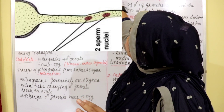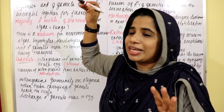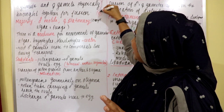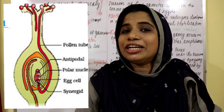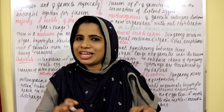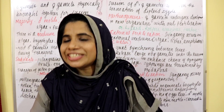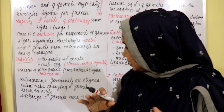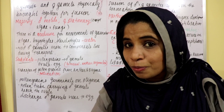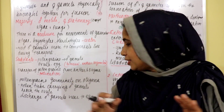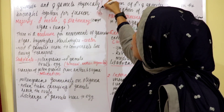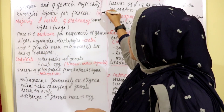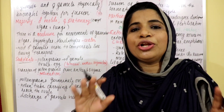The pollen tube carries two male gametes. The male gametes are non-motile. The pollen tube carries the two male gametes into the ovule, and they are discharged to the egg.